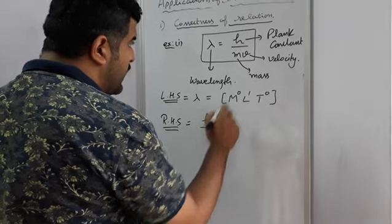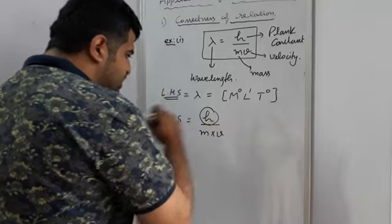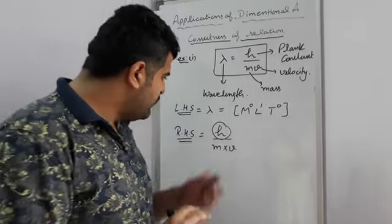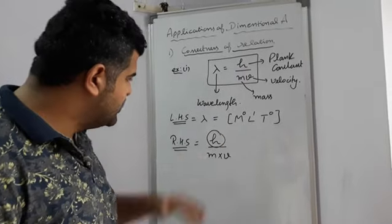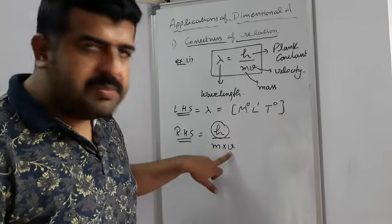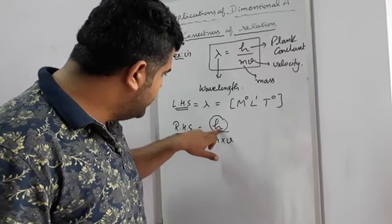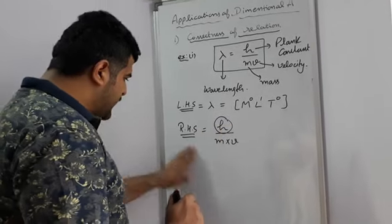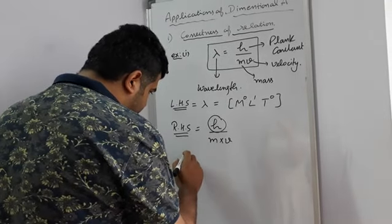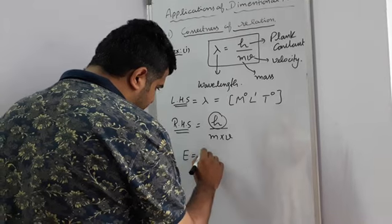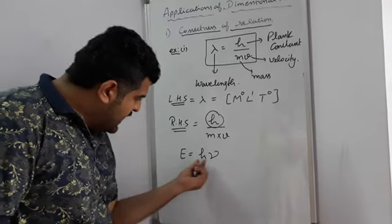Now come to the right hand side. The terms are h, m, and v. Here h is Planck's constant, which may be new for you. To find the dimensional formula of h, we use Planck's energy law: E = hν, where E is energy, h is Planck's constant, and ν is frequency.